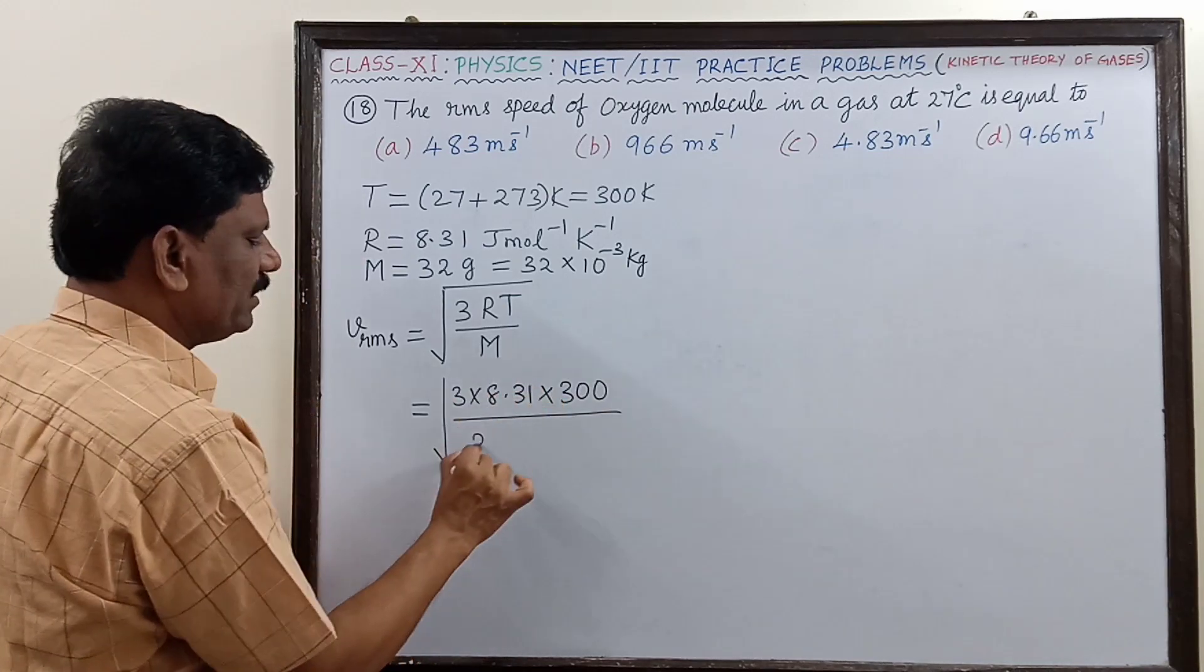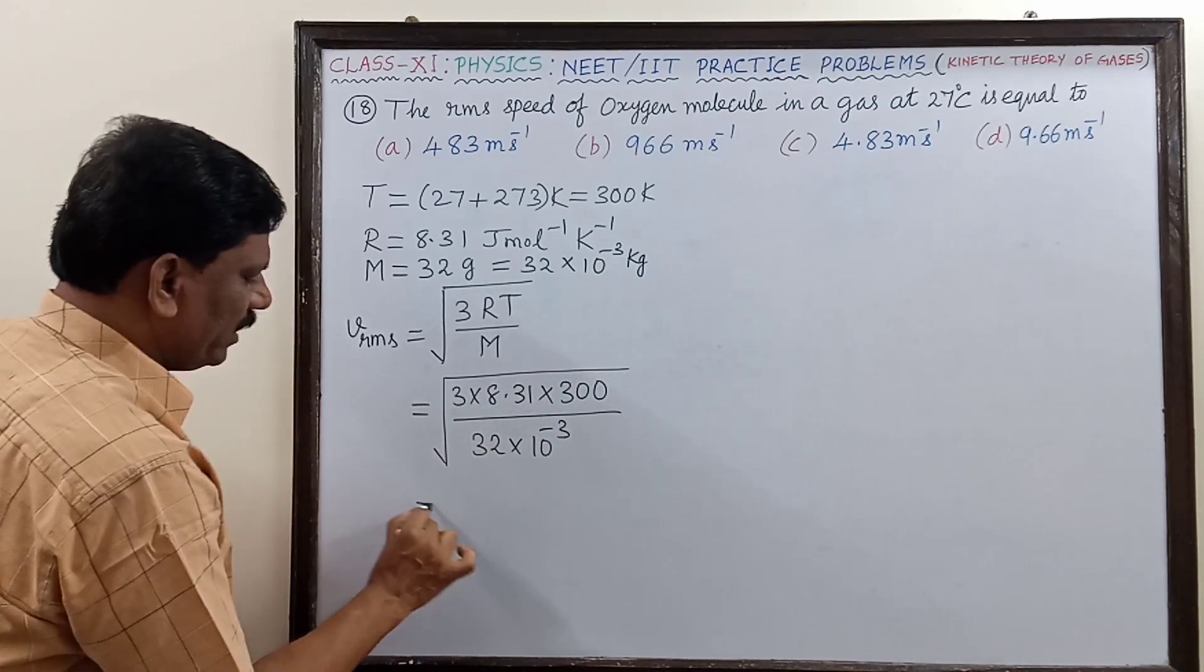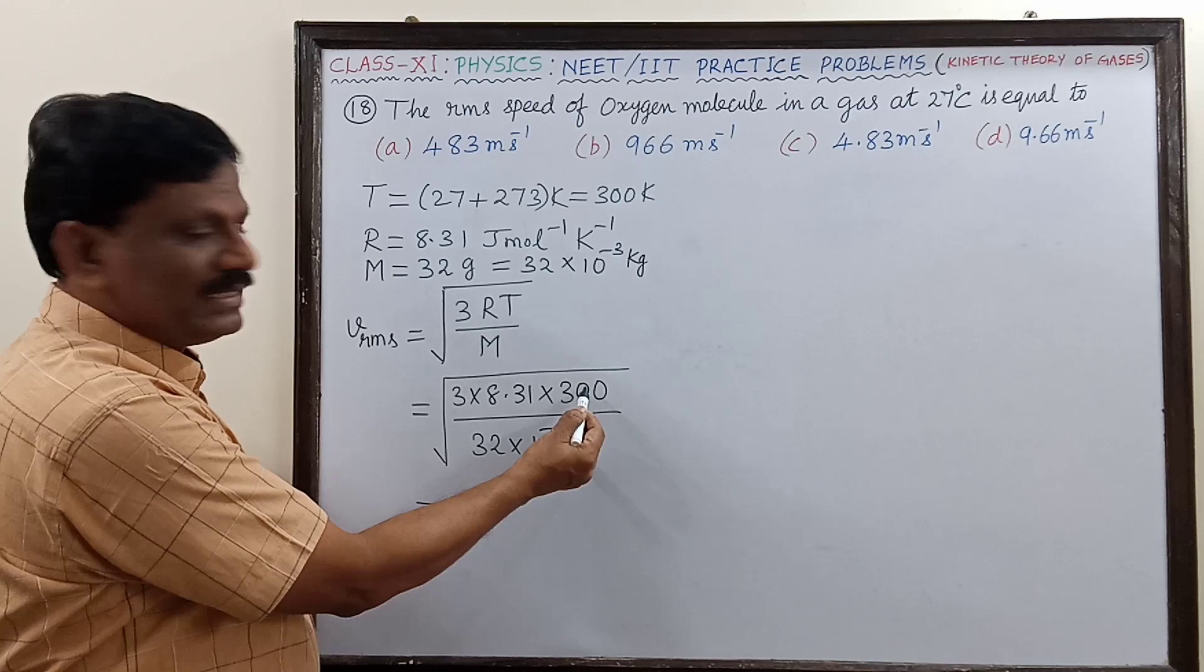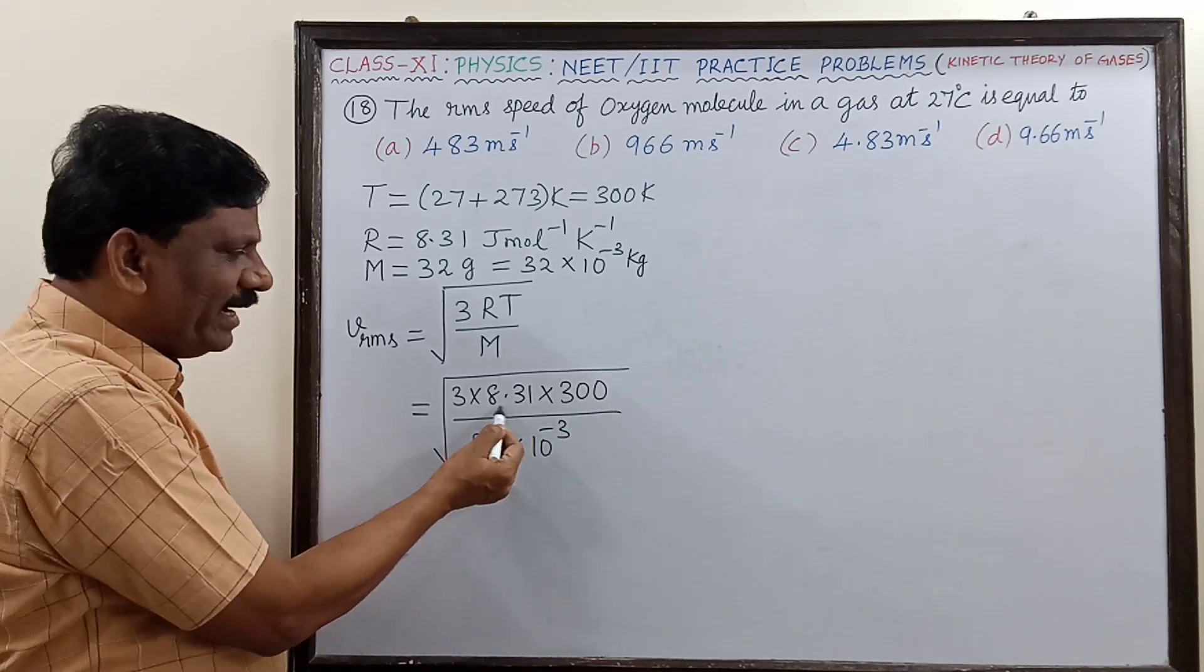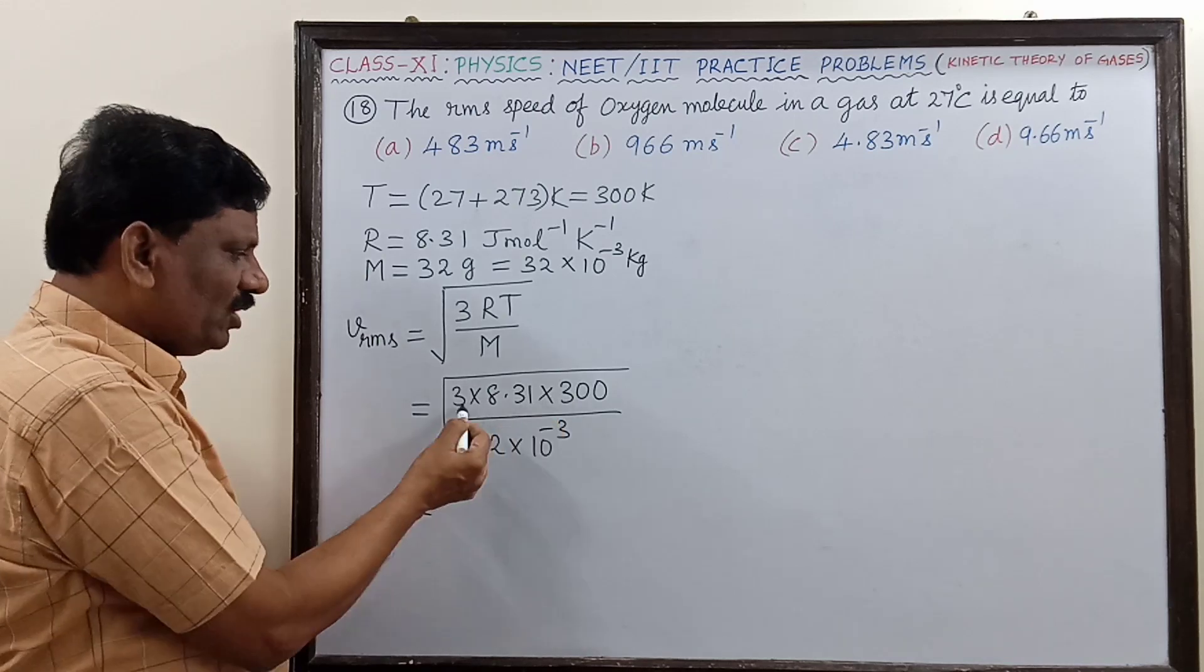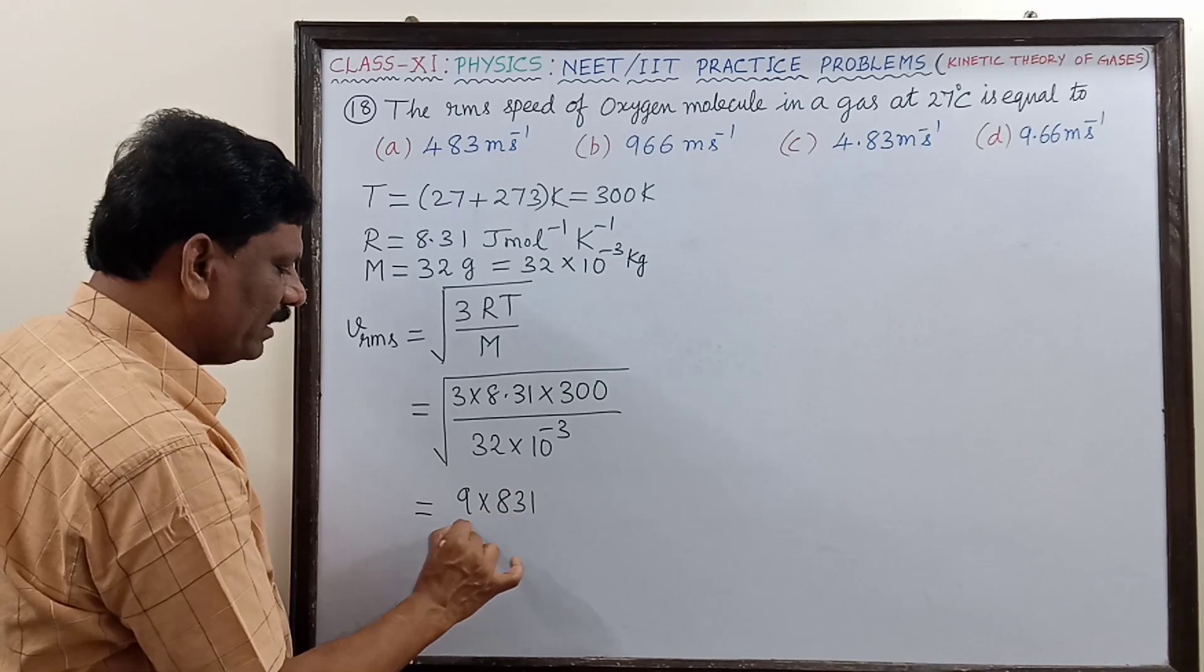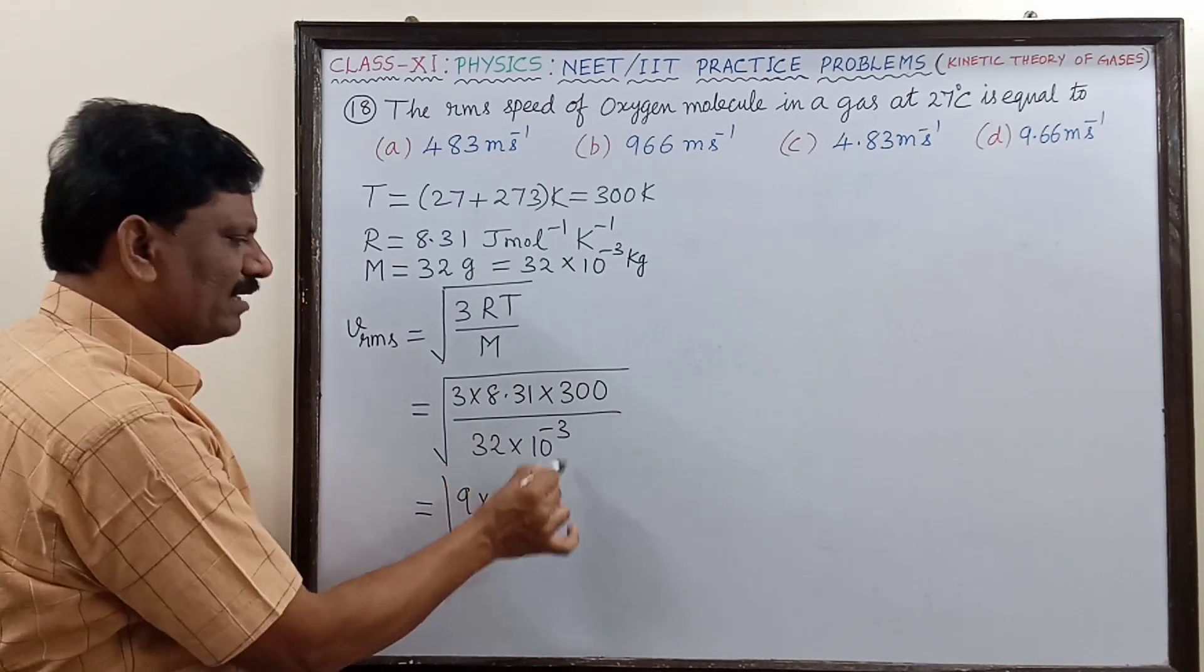32 into 10 power minus 3. Now you see here, in 300 there are two zeros. These two decimals will go off, it will become 831. Then three into three is nine, so nine into 831 divided by 32.